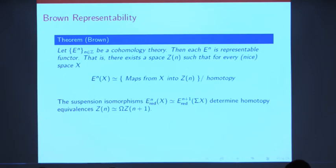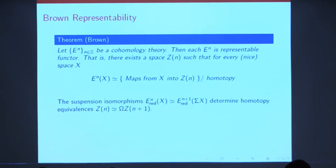So this motivates a definition, one of the most important definitions in homotopy theory, the notion of a spectrum. A spectrum is the data that we just saw on the other slide. It's a sequence of topological spaces indexed by the integers such that each one is identified with the loop space of the next one.